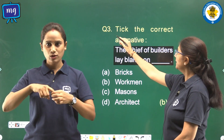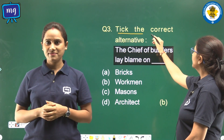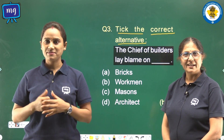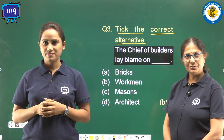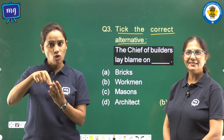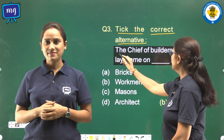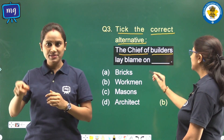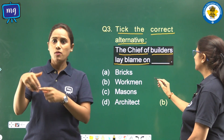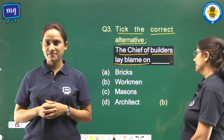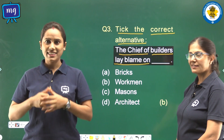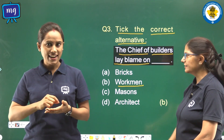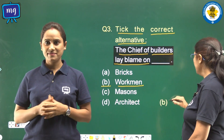Question number 3: tick the correct alternative. In this question we will choose a correct option. The chief of builders laid blame on dash — the correct answer is workman, so we shall write B in the bracket.